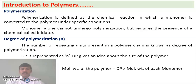The next concept is degree of polymerization — the number of repeating units. After the formation of a polymer, it contains repeating units. The number of repeating units present in a polymer chain is considered as the degree of polymerization. It is represented as DP.